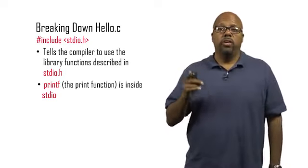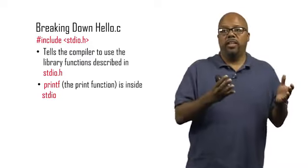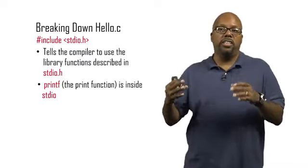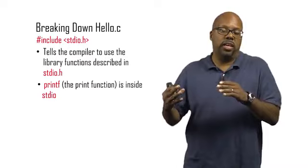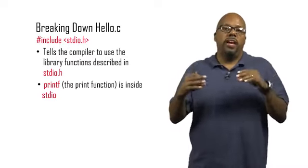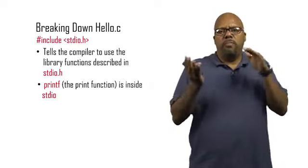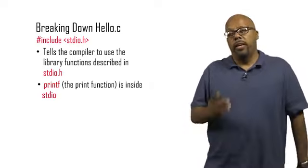An include tells the compiler to include whatever the file is to the right. So hashtag include stdio.h says take this file stdio.h and include it right here in the code. So it just basically cuts and pastes. It takes that stdio.h and pastes it to the beginning of this file.